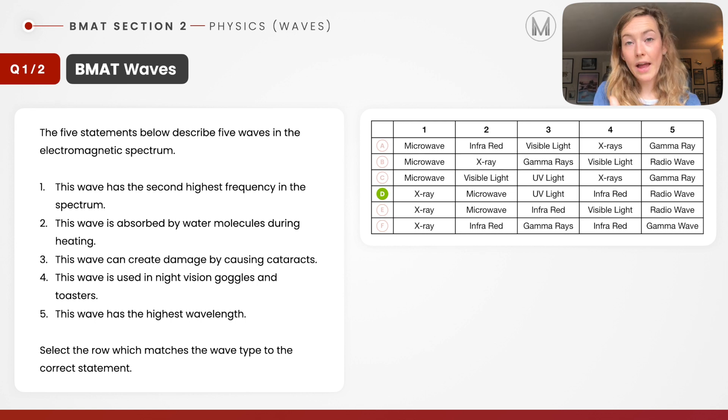I could go through and just double check the others as well. This wave is used in night vision goggles and toasters. Yep, infrared light. And this wave has the highest wavelength. It is indeed radio waves. Remember, not highest frequency, highest wavelength.